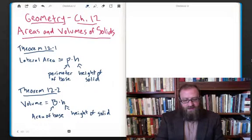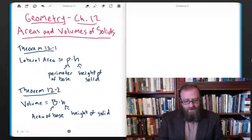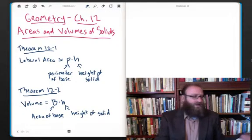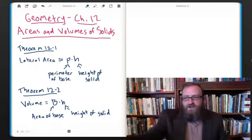First, Theorem 12.1. The lateral area of a right prism equals the perimeter of a base times the height of the prism. In other words, lateral area equals P times H. That's the perimeter of the base times the height of the solid or the prism. Theorem 12.2. The volume of a right prism equals the area of the base times the height of the prism. In other words, V equals capital B times H.